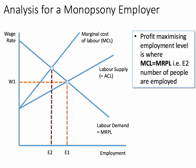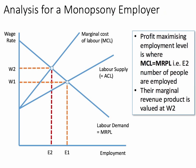So the monopsonist will employ E2 number of people. And those people have an estimated marginal revenue product valued at W2.